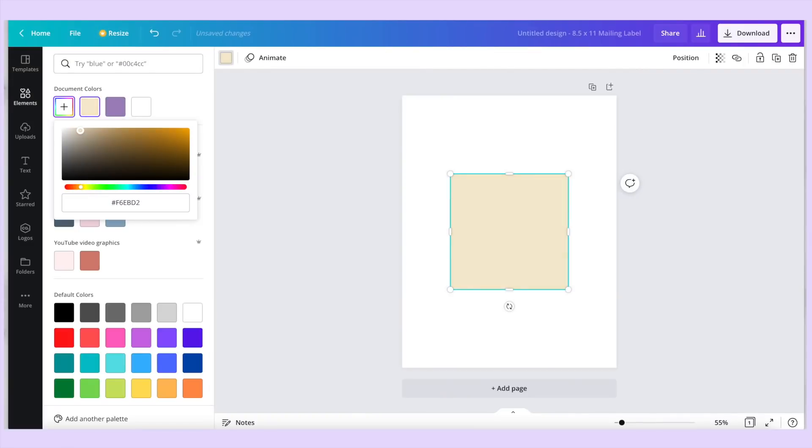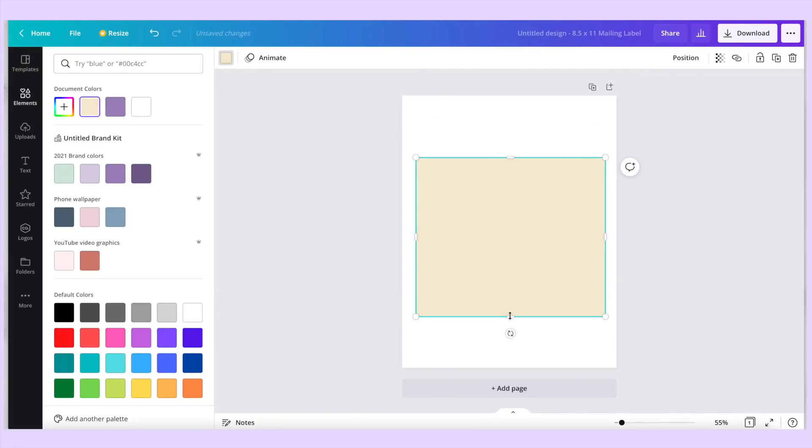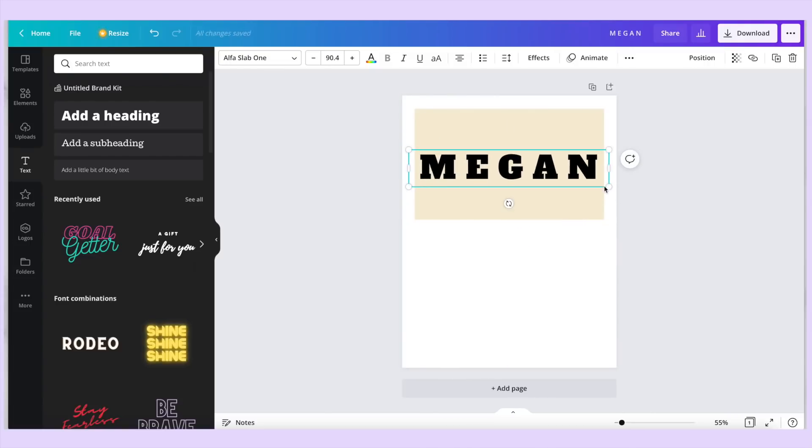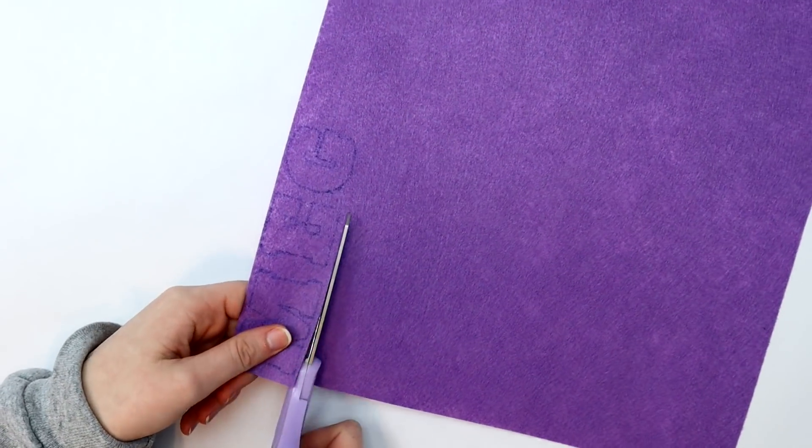I measured my bag, then went to Canva and created a design using the mailing label template. I went into the elements tab, selected a square, and made it the same size as my bag, then I created my design. At first I wanted to spell out my whole name, but that would have taken way too much time and the letters were kind of small, so I was like okay, I'll just put Meg instead. So I redid that and cut it out.